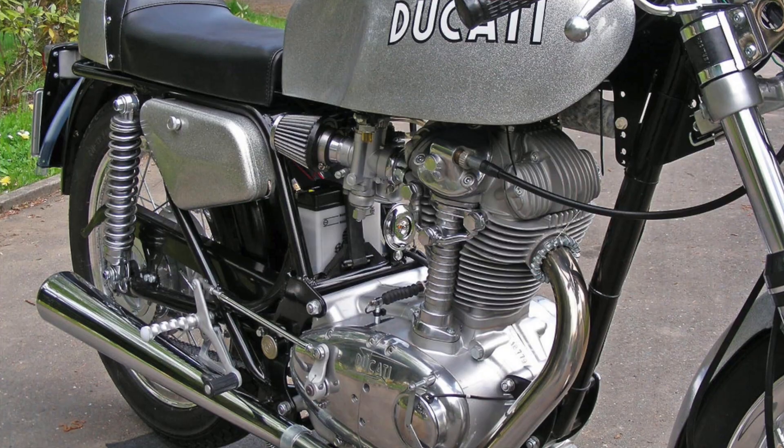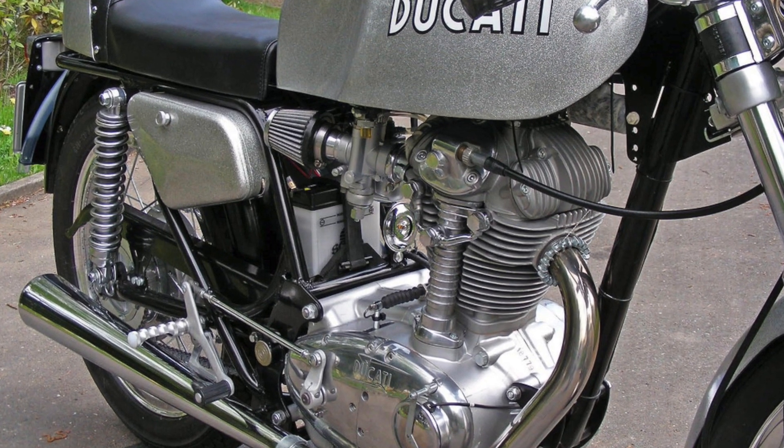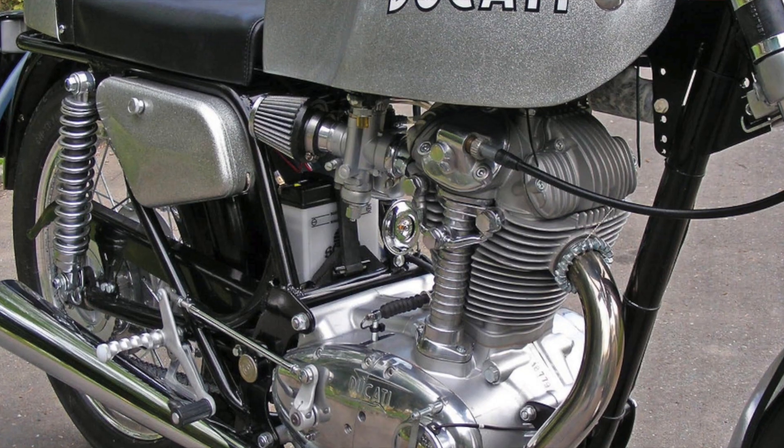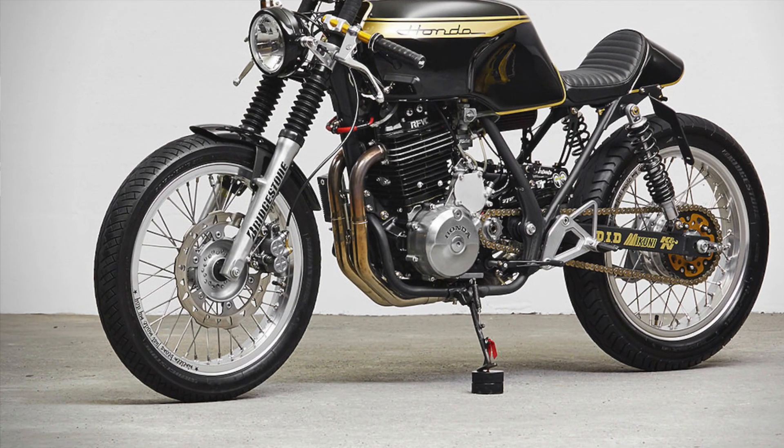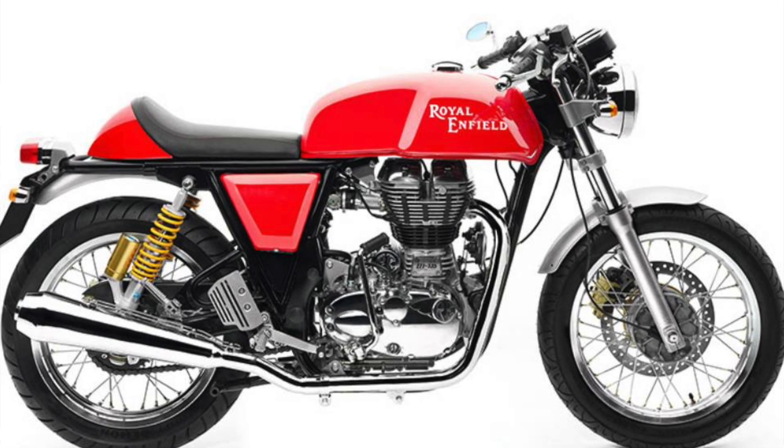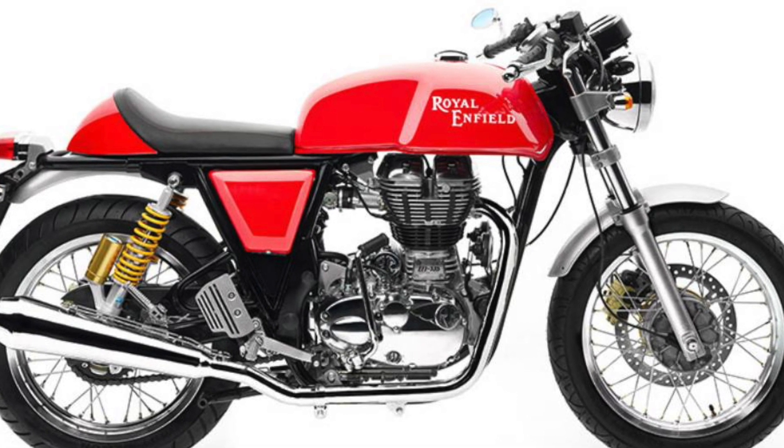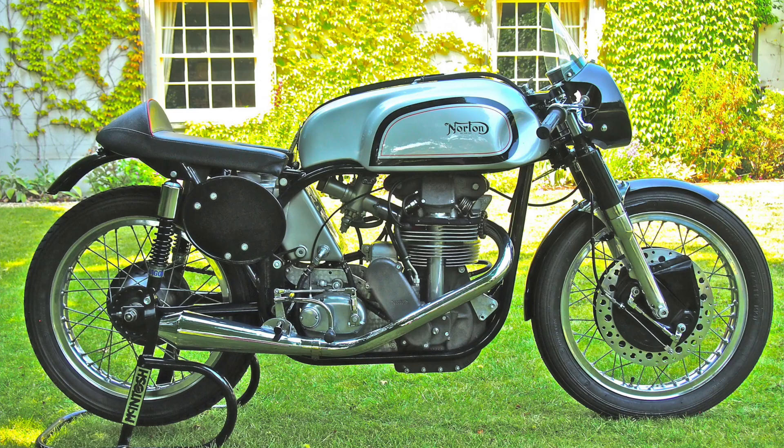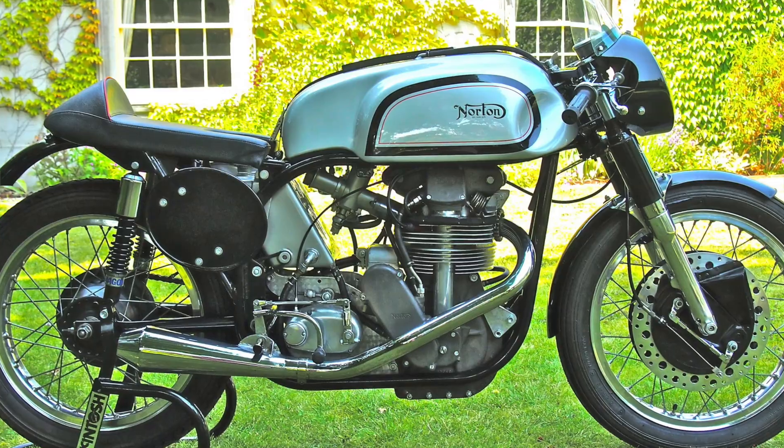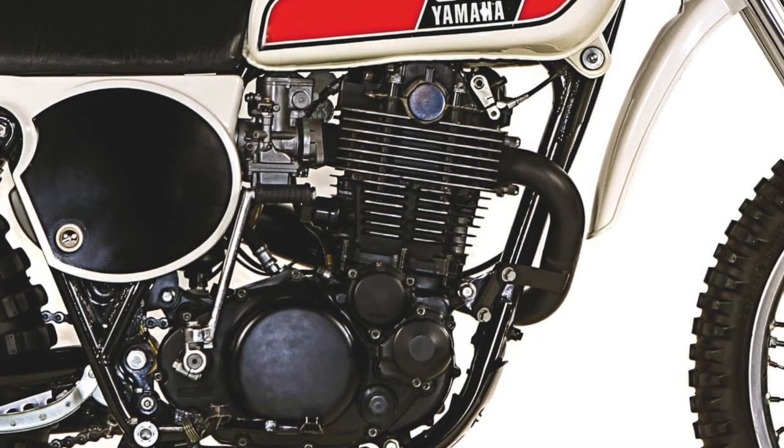Some examples of these, Ducati made some very pretty little singles in its early years. There was the GB500 Honda, Royal Enfield has made a stack of single cylinder motorcycles, this one's a Continental GT, the iconic Manx Norton and the Yamaha XT500.